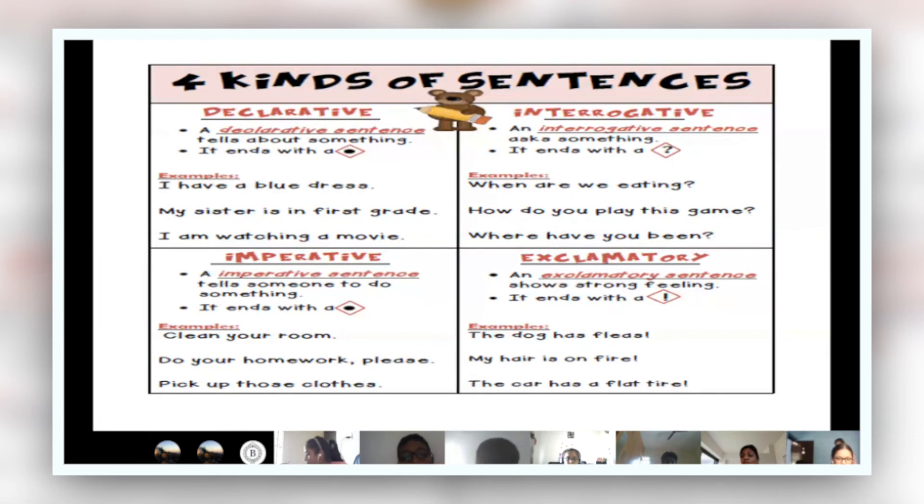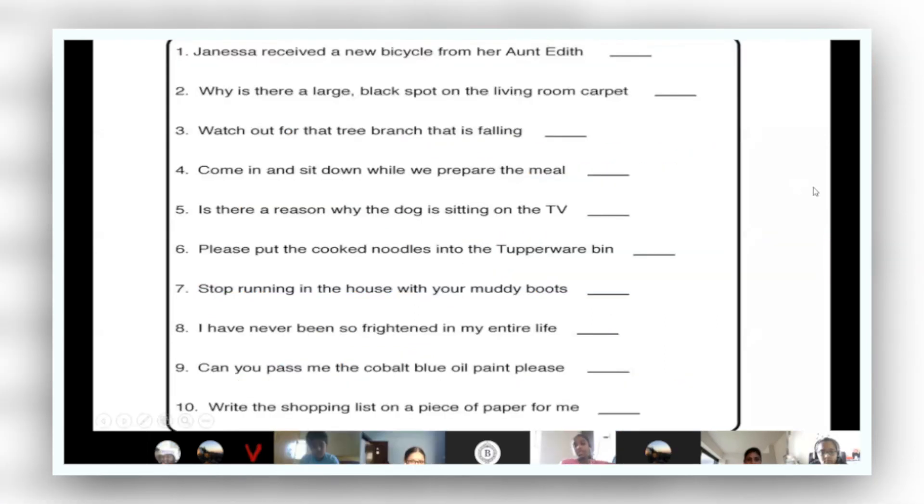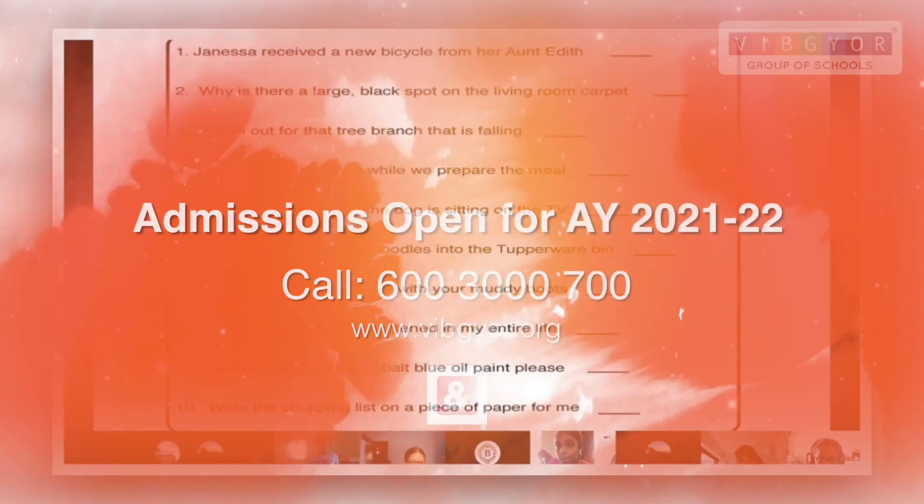Watch out for that tree branch that is falling. Exclamatory. So what will come at the end? Exclamatory mark. Exclamatory mark. This is an exclamatory sentence. You are asking someone to watch out, the tree branch that is falling, so it's exclamatory. Very good.